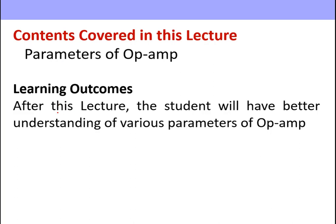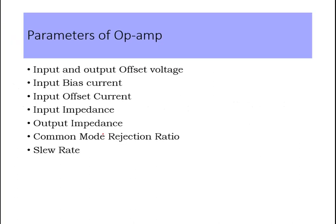The content covered in this lecture is parameters of an op-amp. The learning outcome is that students will have a better understanding of various parameters of an op-amp. The various parameters are: input and output offset voltage, input bias current, input offset current, input impedance, output impedance, common mode rejection ratio, and slew rate.